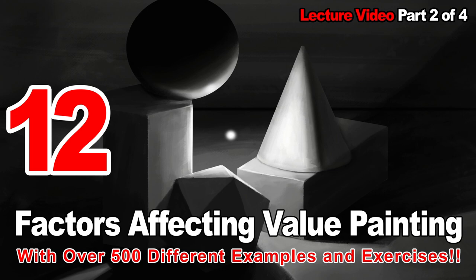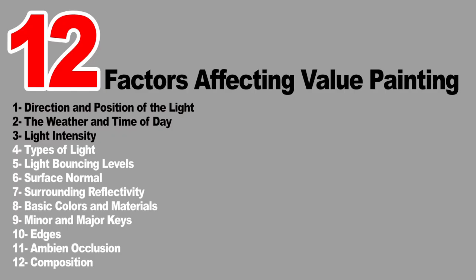Hello everyone and welcome to the second part of lesson 2. In this video we pick up where we left off in the previous lesson and continue discussing the 12 factors that affect your values, talking about three new factors: the types of light, the light bounces, and the surface normal. We covered most of them in previous lessons and exercises, but here we will take an in-depth look at each of them and see many examples and demonstrations.